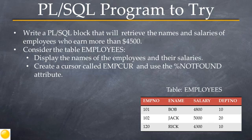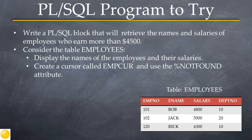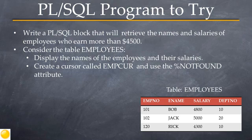Here is a program for you to try that uses an explicit cursor. Write a PL/SQL block that will retrieve the names and salaries of employees who earn a salary greater than 4500. The program should display the name of the employee and their salary. Use a cursor called EMPcur and the %NOTFOUND attribute to ensure that processing stops after all the rows from the cursor have been fetched. You can pause this video if you wish to try it, as the solution is on the next slide.